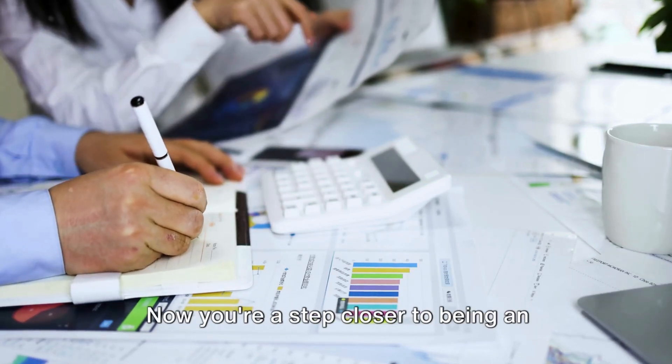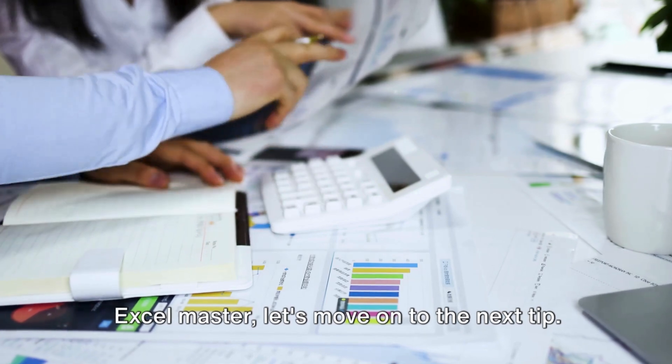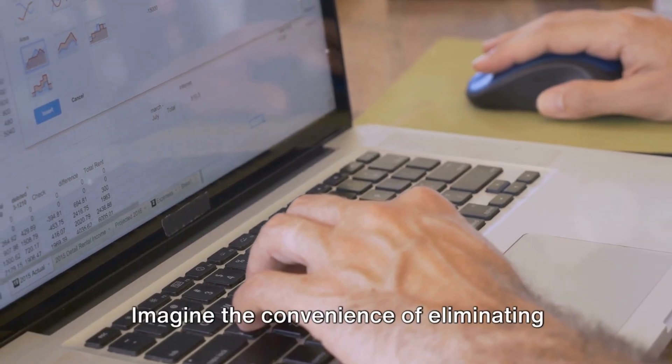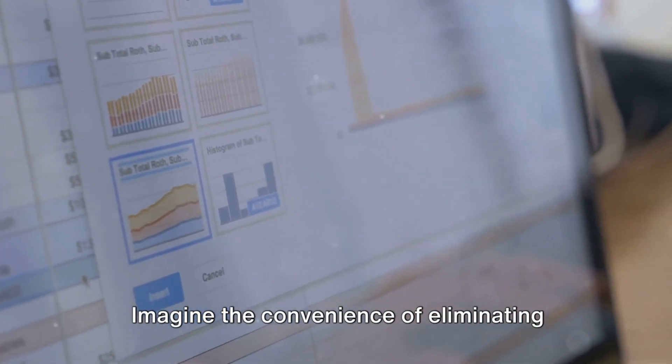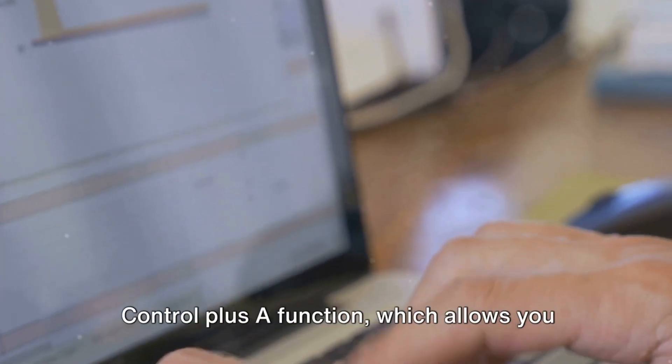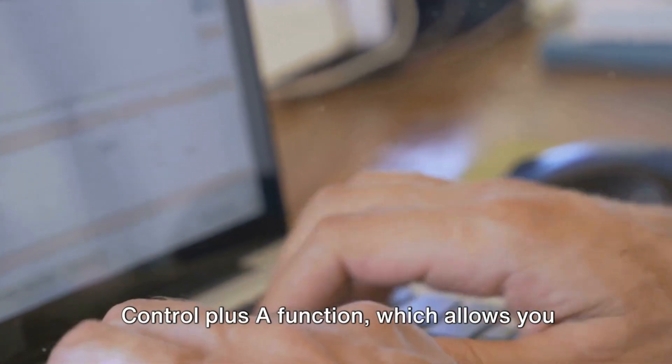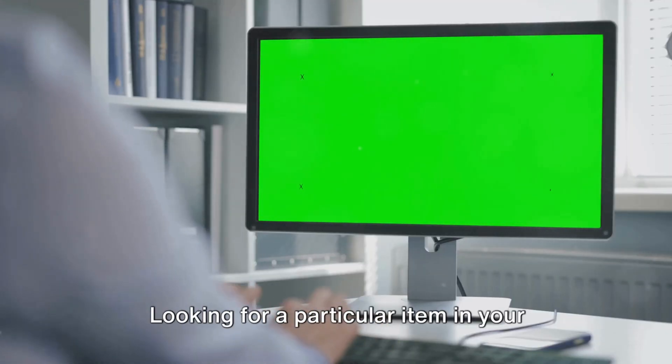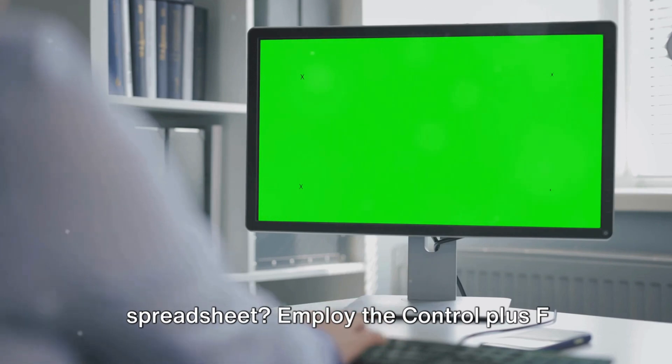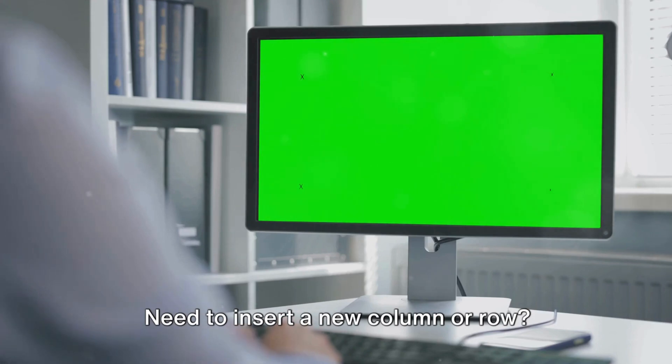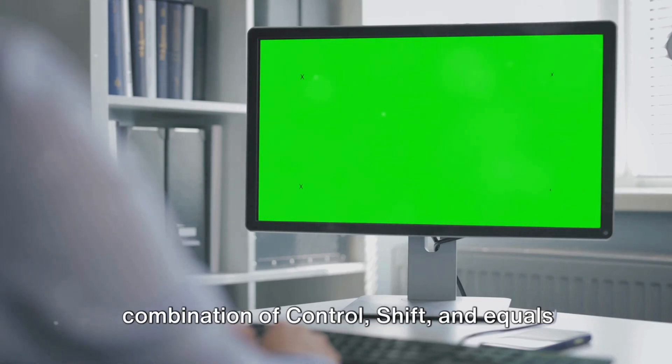Let's speed up your work with some handy keyboard shortcuts. Imagine the convenience of eliminating the need to repeatedly use the mouse. The first shortcut is Control plus A, which allows you to select all cells in a flash. Looking for a particular item? Use Control plus F to open the find and replace dialog box.